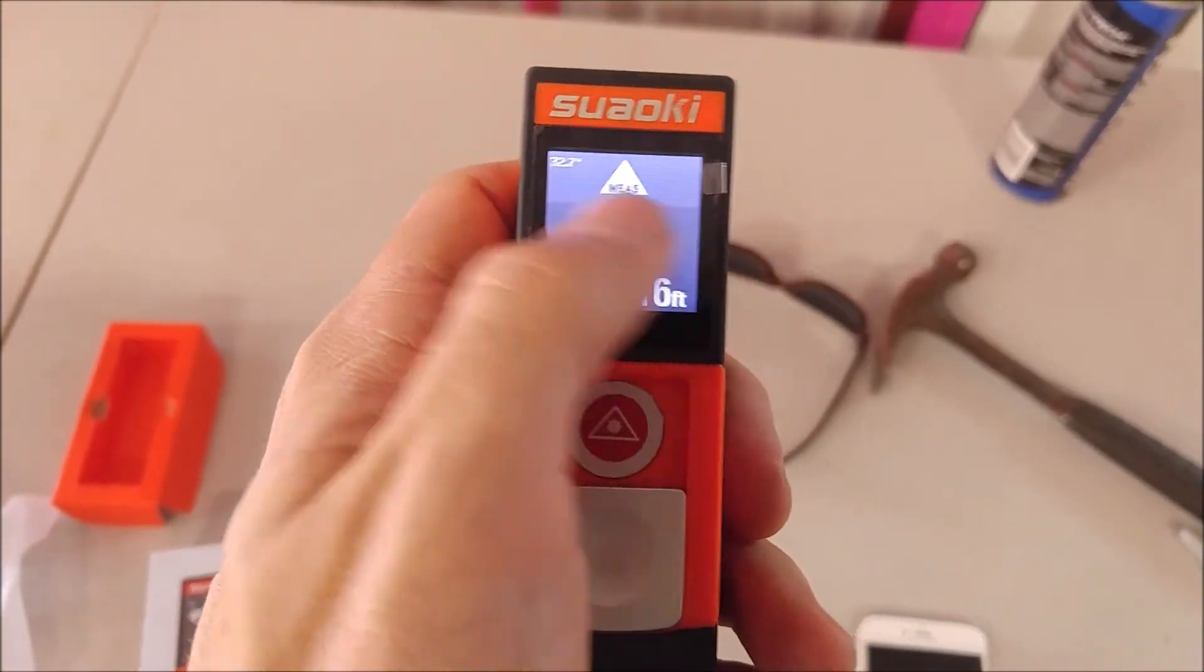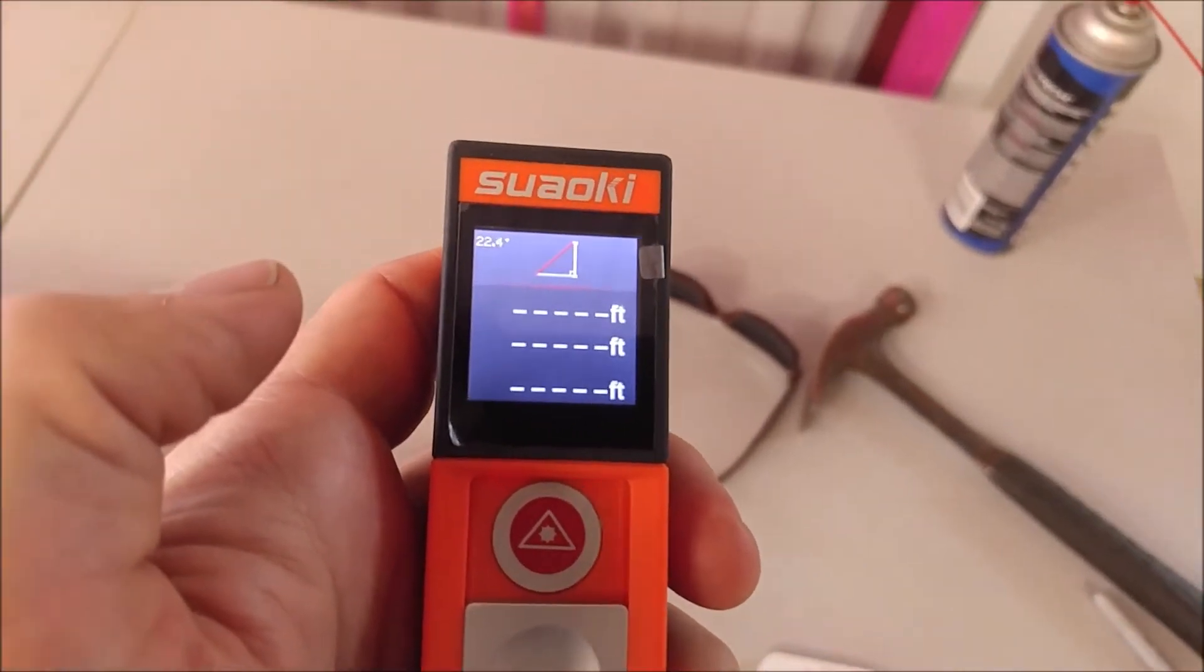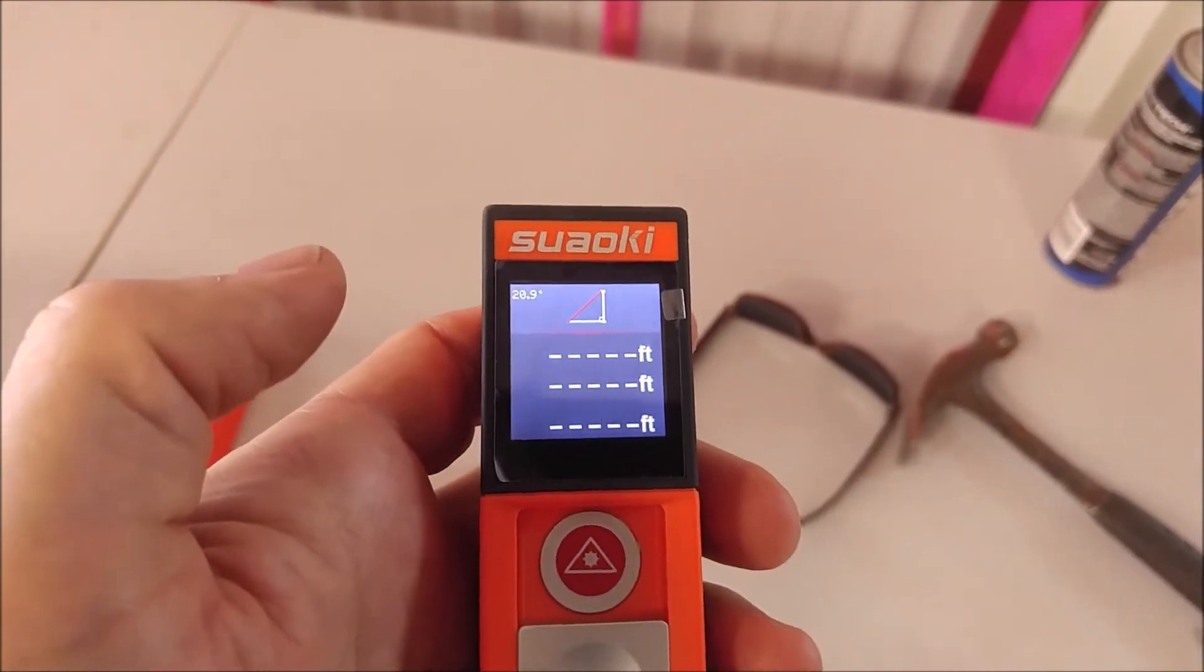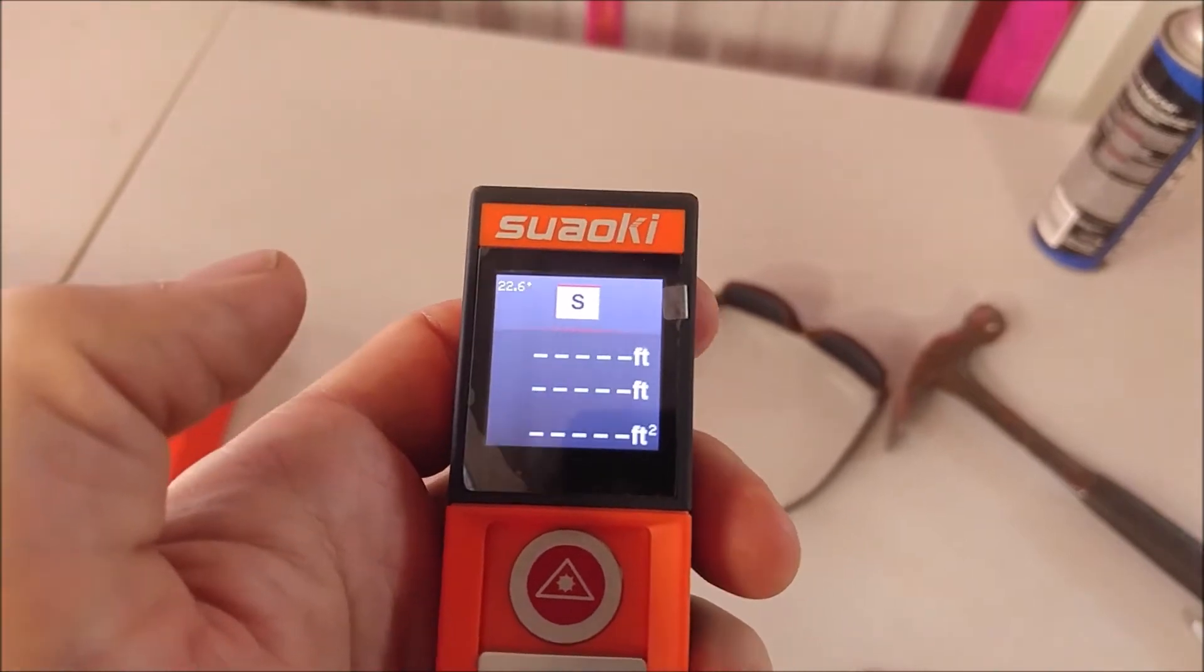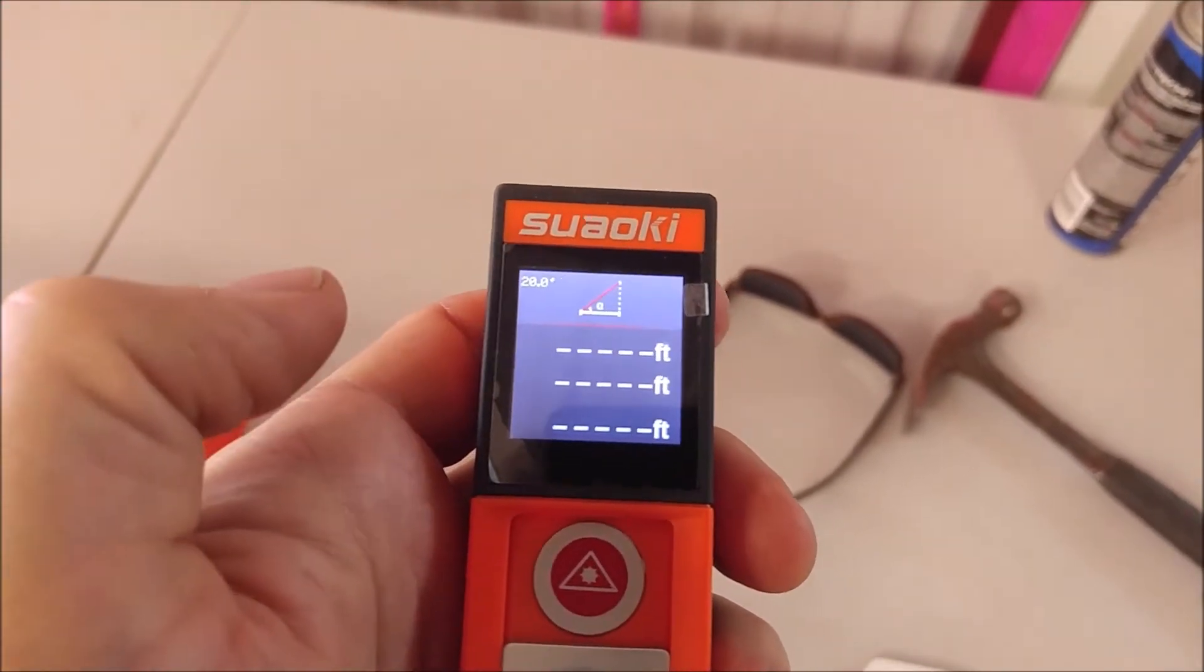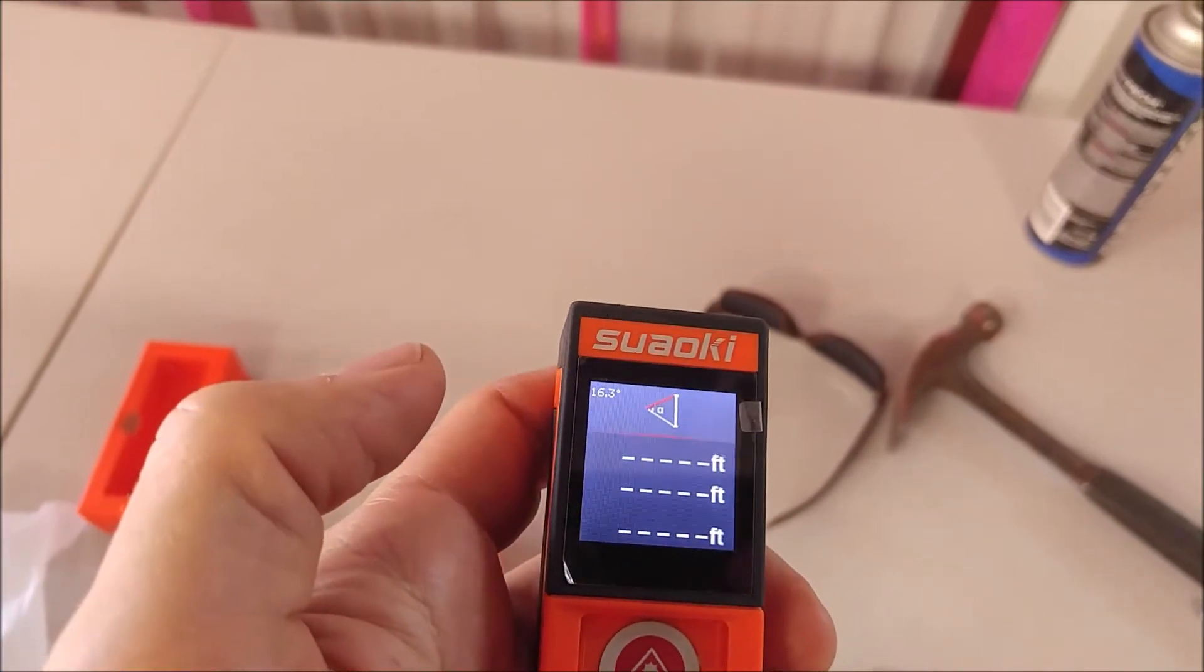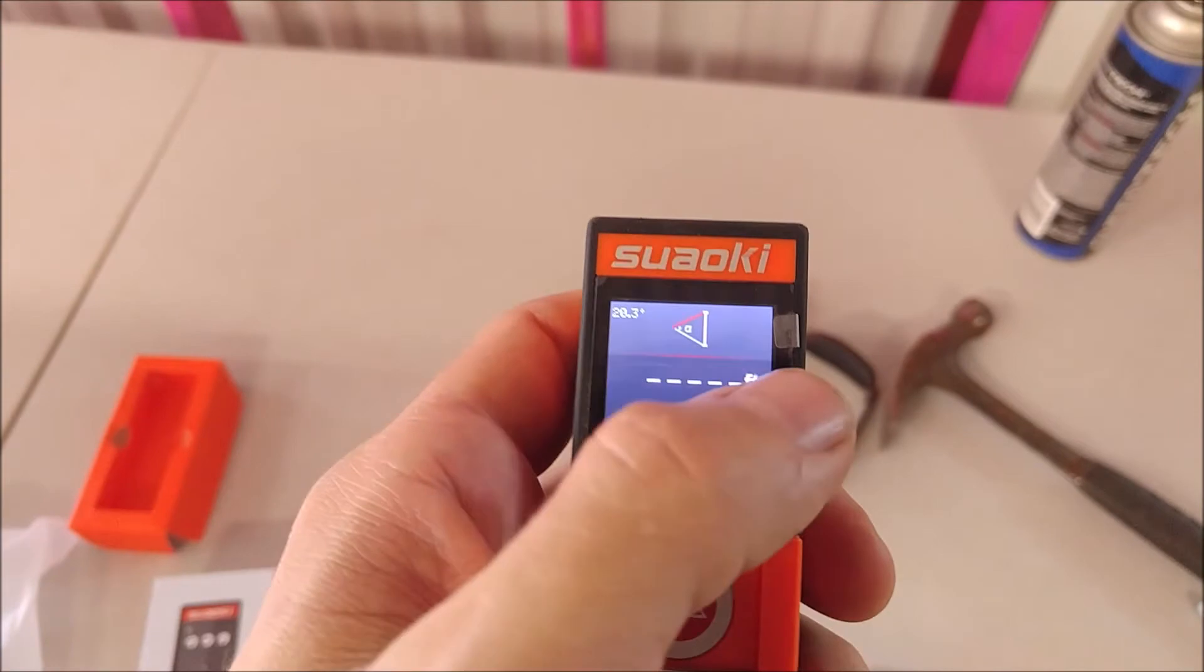So you've got distance measurement, you've got height measurement. It actually measures using the Pythagorean theorem to tell you the height of an object, if you want to know how high a tree or a large building is. Area of a room measurement, and then you've got average height measurement. You just measure two different points on the same plane and it will tell you what the distance between those points is.